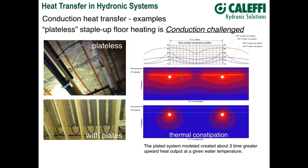Without plates, you create hot spots directly above the tube and the temperature drops off quickly on both sides. We've come up with a term for this: thermal constipation. The plateless system is a thermally constipated system. We could put 150 or 160 degree water in there, but the combination of different materials, their thermal conductivities, and the geometry — think about a round tube against a flat surface giving very limited contact — severely limits heat transfer.